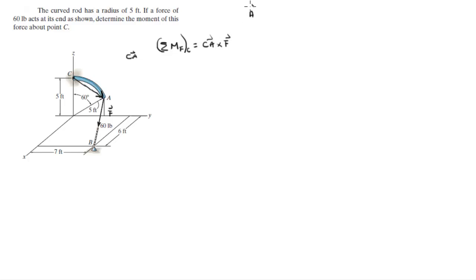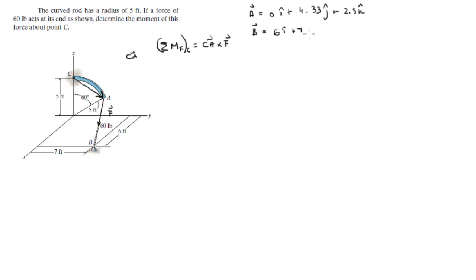Let's find all the points involved. Point A sits at 0i plus 4.33j plus 2.5k, where 4.33 comes from 5 sine of 60 and 2.5 comes from 5 cosine of 60. Point B sits at 6i plus 7j plus 0k, and C sits at 0i plus 0j plus 5k.